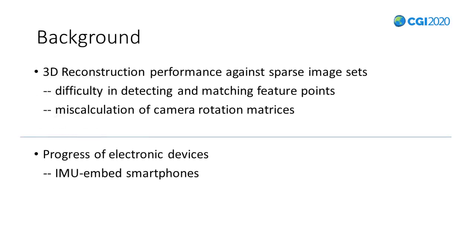3D reconstruction has long been studied over years. However, it has high demand on the completeness and quality of image sets. Its performance against a sparse image set is to be improved. The main reason is the difficulty in detecting and matching feature points, and thus miscalculation of rotation matrices. As a sparse image set provides limited information, we turn to extra methods.